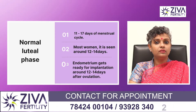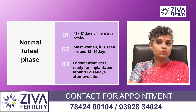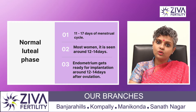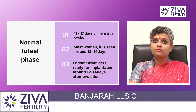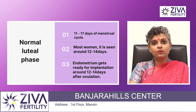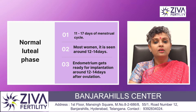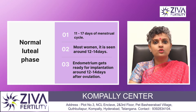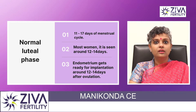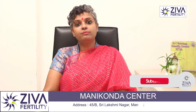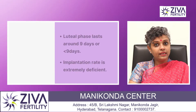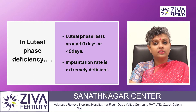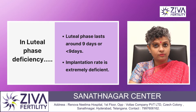A normal luteal phase is around 11 to 17 days, and that's very commonly seen. But in most women, it is around 12 to 14 days — that is the luteal phase where the endometrium is getting ready for implantation, around 12 to 14 days after ovulation. In deficient patients, around 9 days or less than 9 days of luteal phase is seen.